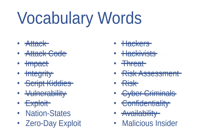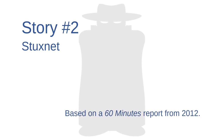I was able to use most of the vocabulary words from pages 6 through 11 of the textbook in that epic hacking story. The only terms I seem to have left out are nation-state, zero-day exploit, and malicious insider. I'll tell you another story to use those three terms — I'll make this one shorter. The following story, about a cyberattack that was probably carried out by a nation-state, is based on a profile that ran on CBS's 60 Minutes in 2012.